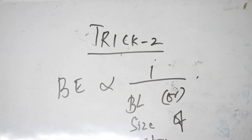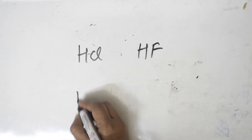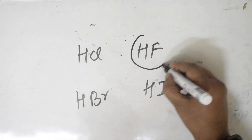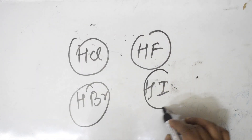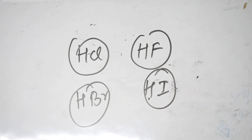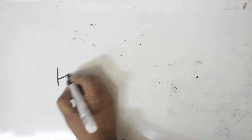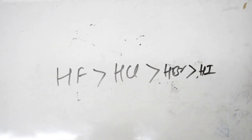Let's apply trick two with an example. I have HCl, HF, HBr, and HI. The size of F is smallest, then Cl, then Br, and I is the biggest. Since smaller size means more bond energy, the order of bond dissociation energy is: HF > HCl > HBr > HI. Trick number two is working!